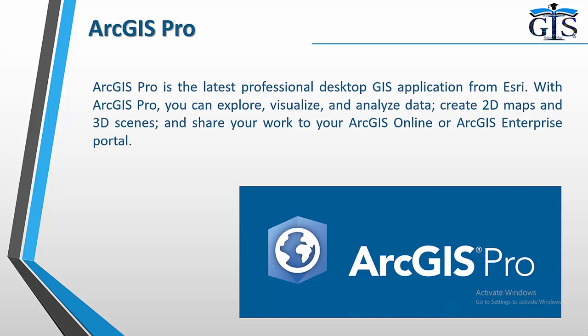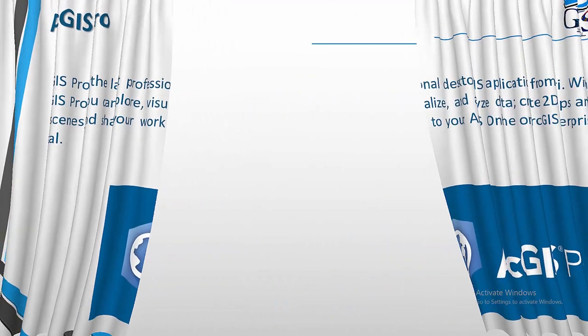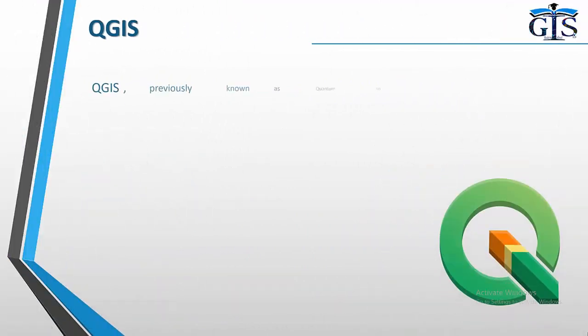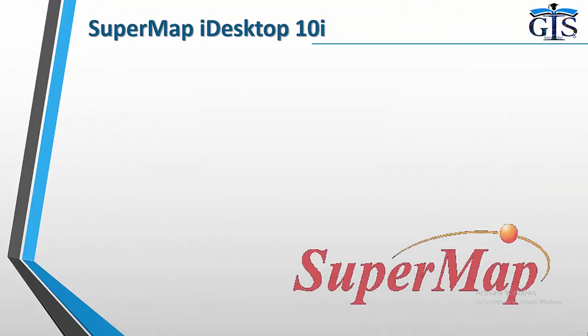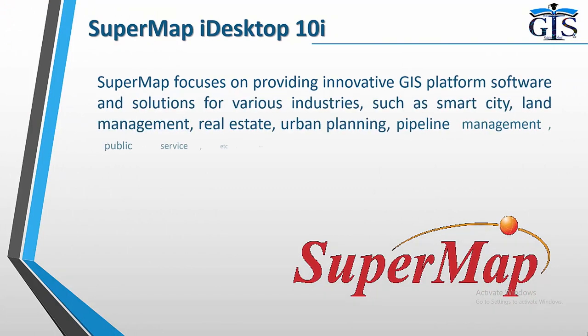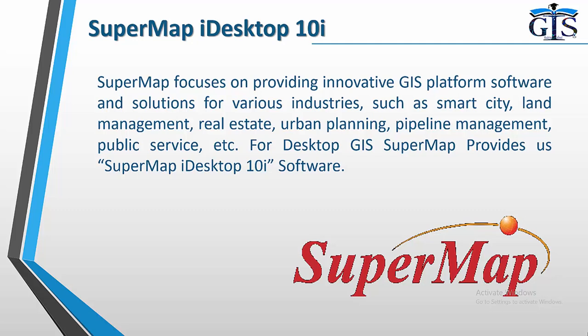With ArcGIS Pro, you can explore, visualize and analyze data, create 2D maps and 3D scenes, and share your work to your ArcGIS Online and ArcGIS Enterprise portal. QGIS, previously known as Quantum GIS, is a free and open-source cross-platform desktop GIS application that supports viewing, editing and analysis of geospatial data. SuperMap focuses on providing innovative GIS platform software and solutions for various industries such as smart city, land management, real estate, urban planning, pipeline management and public services. For desktop GIS, SuperMap provides the SuperMap iDesktop 10i software.